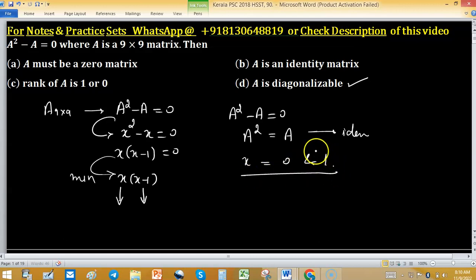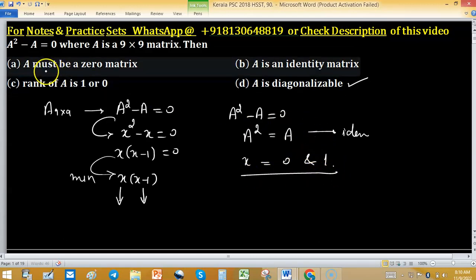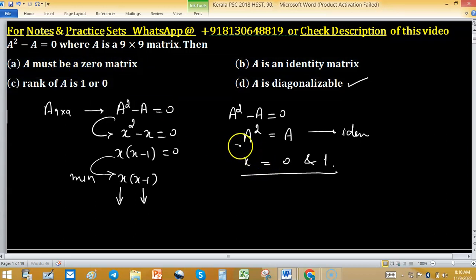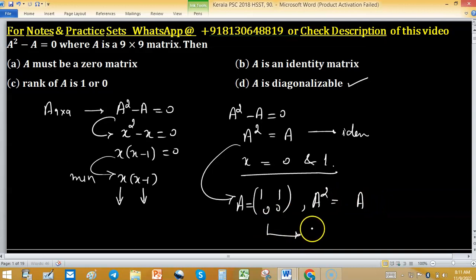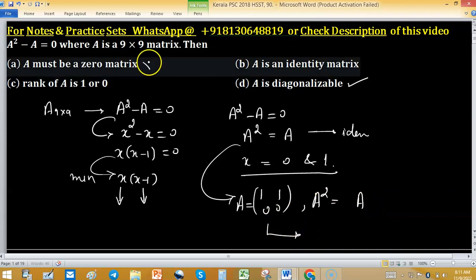Option A: A must be a zero matrix. It is not necessary. If you consider the matrix [1, 0; 0, 0], suppose this is A, then A squared equals A, but A is not zero matrix. Option A has been discarded.